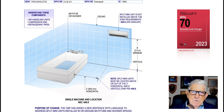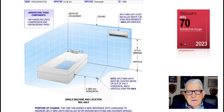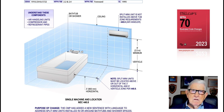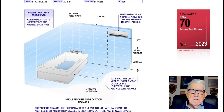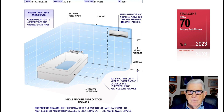This illustration deals with single machine and location in accordance with 440.8. The purpose of this change is to let the user of the NEC know that a split mini unit is not to be installed above a tub. The zone requirements of 440.8 show the unit installed out of the zone — three feet horizontally and eight feet vertically.